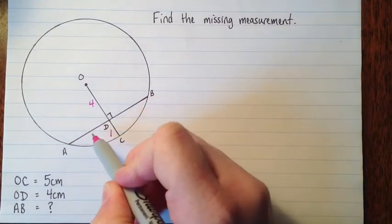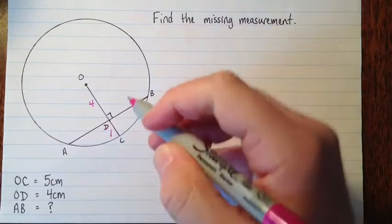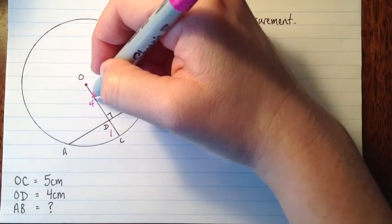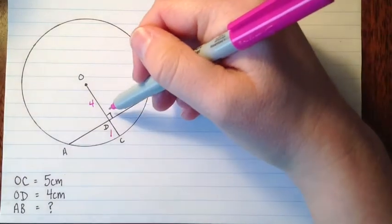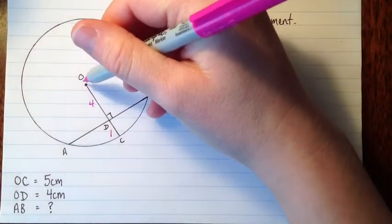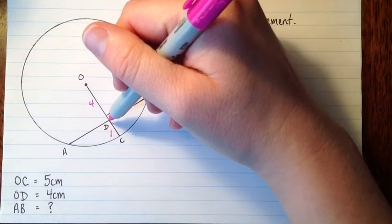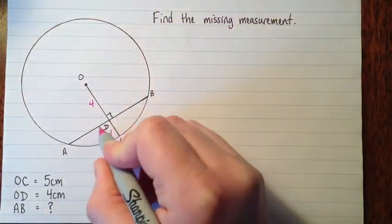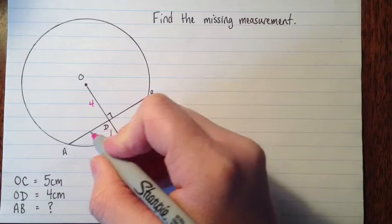So here we have a chord on a circle, and we've got this line that comes from the center out to the edge of the circle, and it's perpendicular to the chord. So we have a chord property that tells us if the line is perpendicular to the chord and goes through the center of the circle, then it bisects the chord. So these two things are equal size.